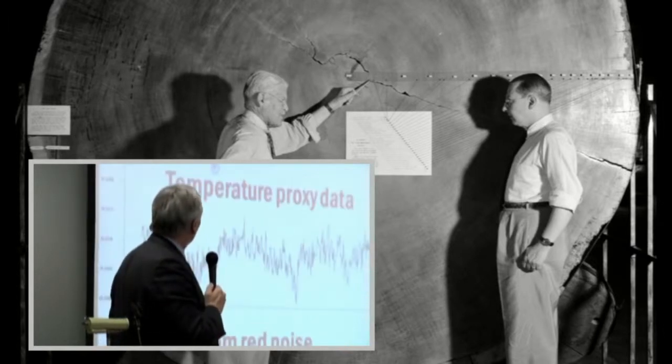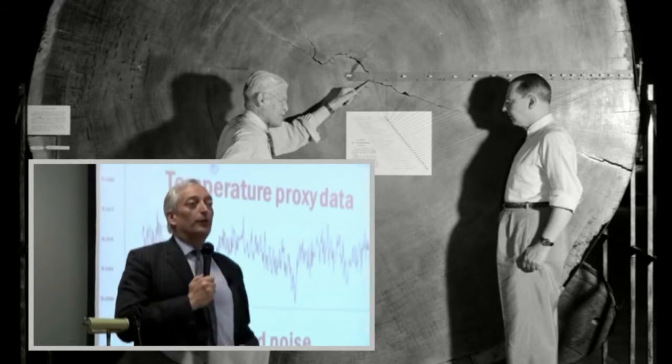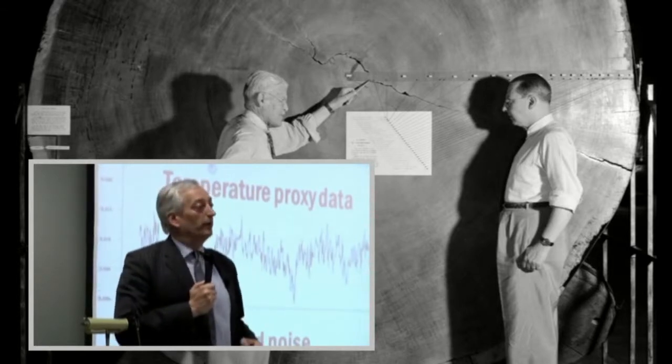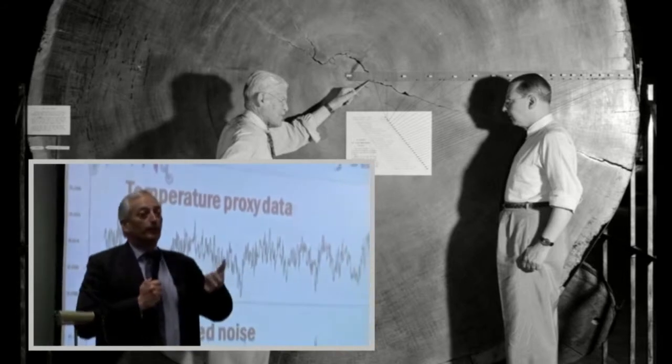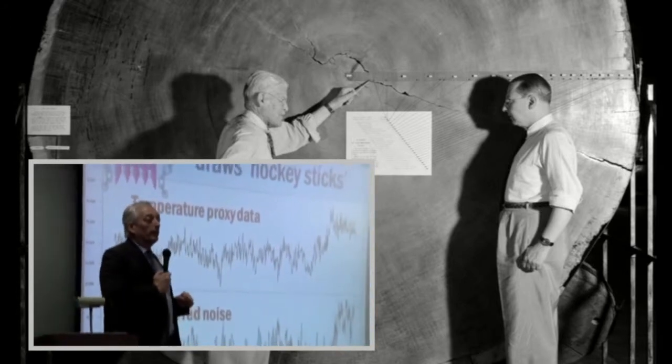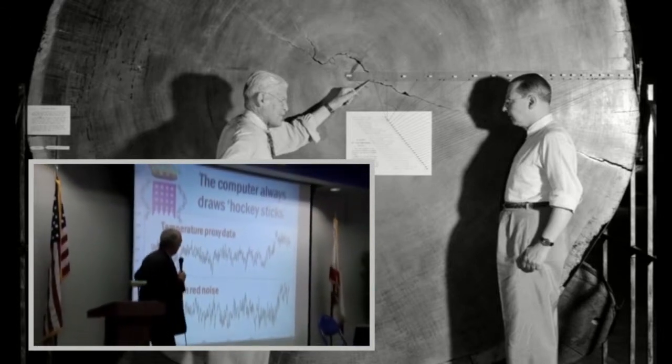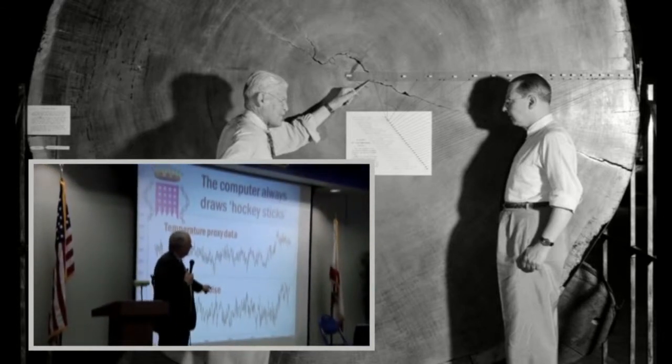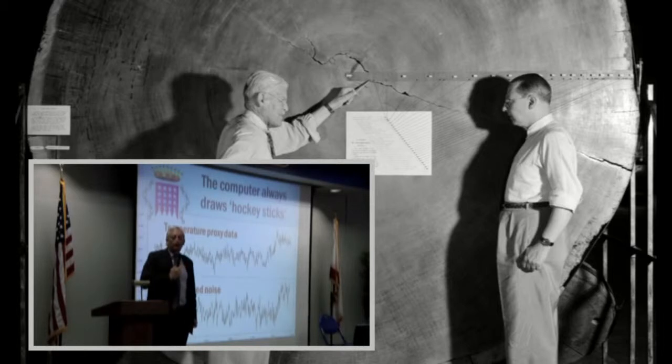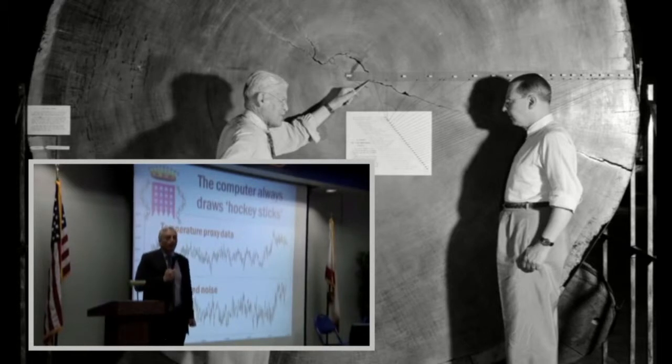Watch what else they did. Even if you put random red noise, a particular kind of random data, into the computer program they used to draw the graph, 99 times out of 100 it would draw hockey sticks - no change for 1,200 years and then a huge uptick in the 20th century. The computer algorithm was bent to give them a graph of the shape that they wanted so that they could abolish the medieval warm period.